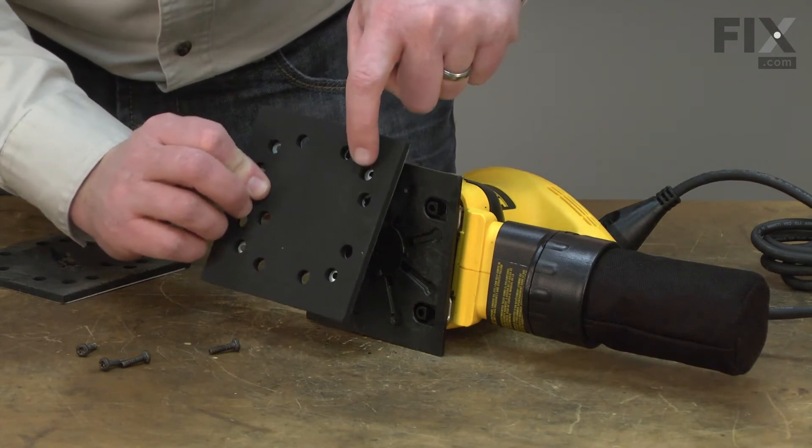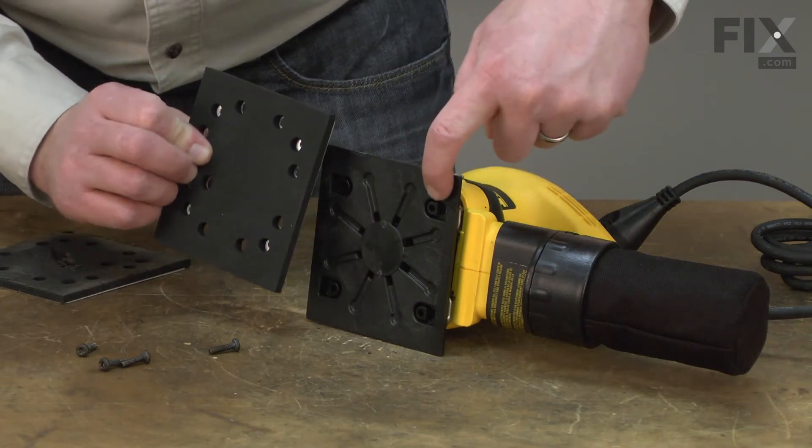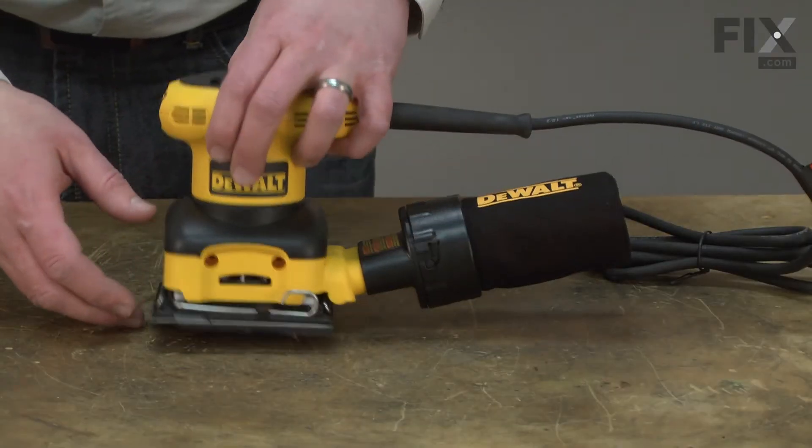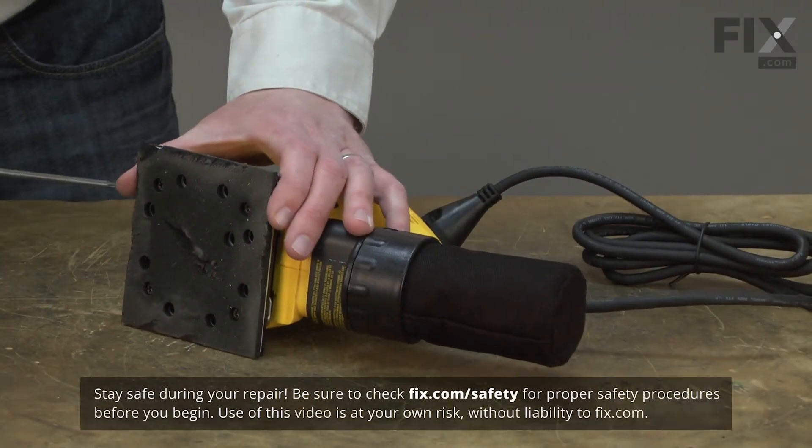Replacing a worn sander pad and backing plate is an easy repair that you can do yourself, and I'm going to show you how. I'll start by removing the old pad. It's held in place with four screws.